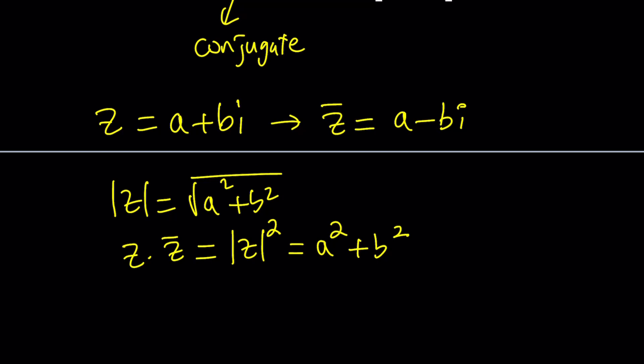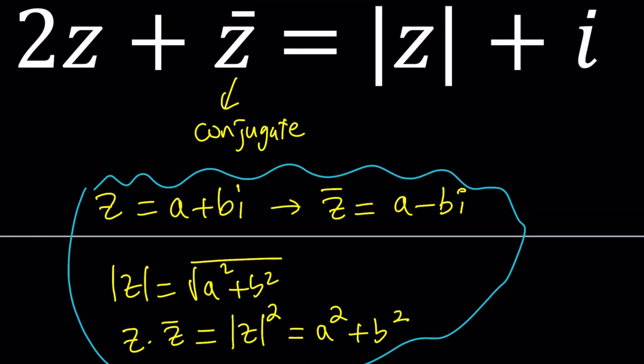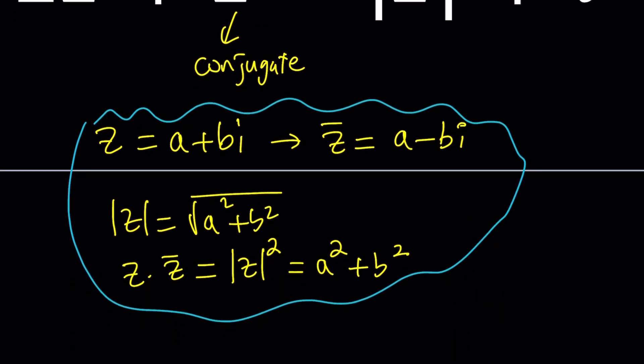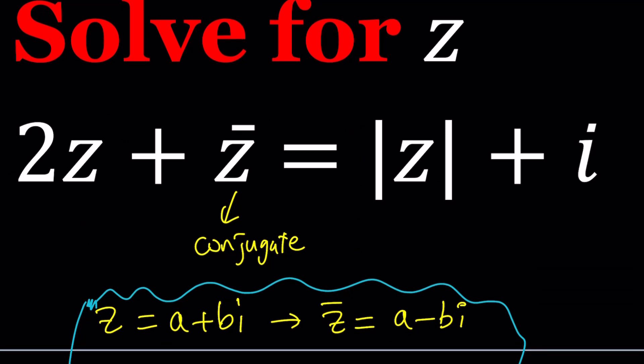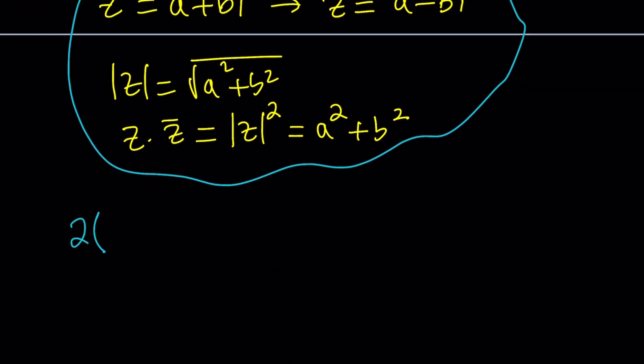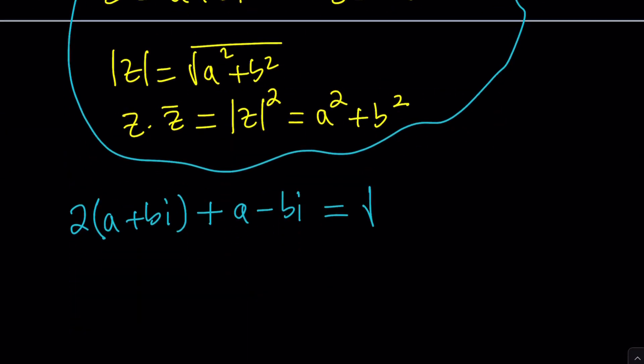So this was a quick summary. You could definitely look up the lecture videos. I made about nine lecture videos from very basic to more advanced stuff. Check those out if you're new to complex numbers. Now let's replace Z with A plus BI. We have 2 times A plus BI plus Z bar which is A minus BI equals the absolute value of Z which is the square root of A squared plus B squared plus imaginary unit I.